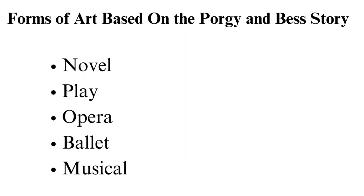Forms of art based on the Porgy and Bess story. The story of Porgy and Bess originated from DuBose Hayward's novel Porgy. Due to the novel's impact, the story inspired many people and was adapted into numerous forms of art, from plays, operas, ballet, musicals, and films, to television productions. The novel Porgy of 1925 by DuBose Hayward is the original form of art that brought the story to life. After the novel, a play was produced in 1927. Todd Duncan acted as Porgy, and Brown as Bess.